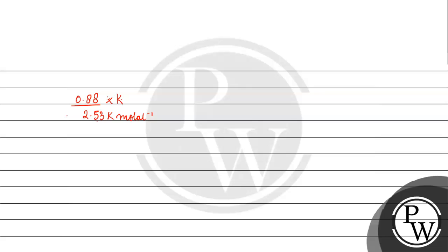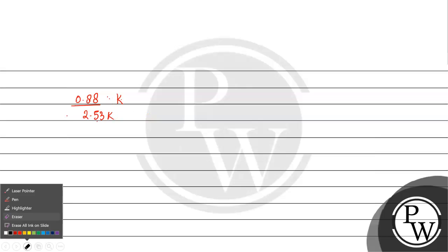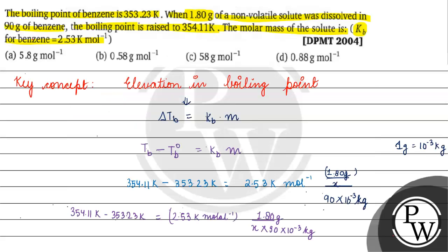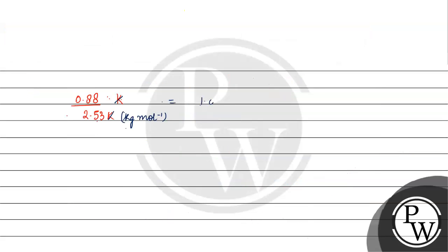Kelvin molar inverse can be written as kg per mole. Kelvin will cancel. What will be left? 1.80 grams by x divided by 90 times 10 to the power minus 3 kilograms. Now 1.80 will be 1.80 grams into 2.53 mole inverse by 90 times 10 to the power minus 3.